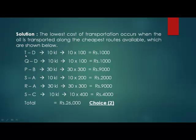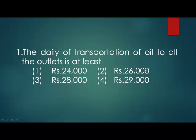So these are the calculations: T supplies 10 kilolitres to D, Q supplies 10 kilolitres to D, P supplies 30 kilolitres to B, S supplies 10 kilolitres to A, and R supplies 30 kilolitres to A. The total cost comes out to Rs. 26,000. This gives us choice 2, so Rs. 26,000 is our answer.